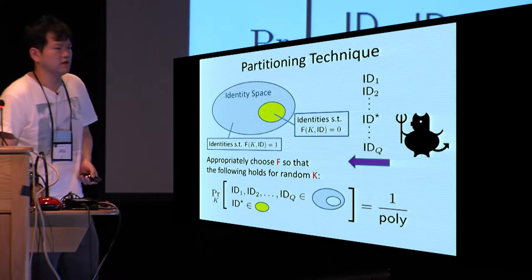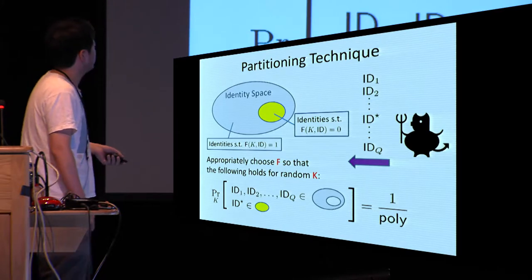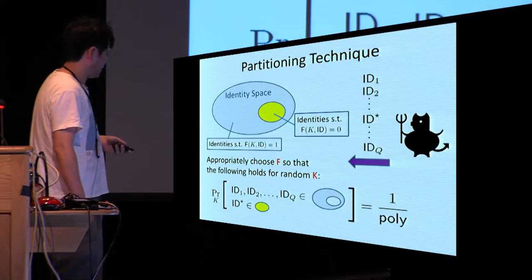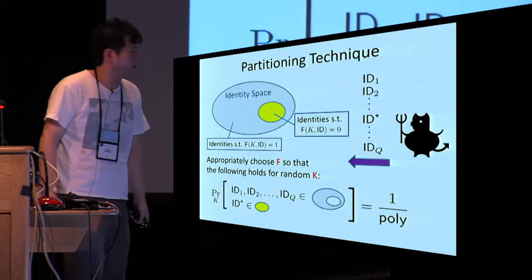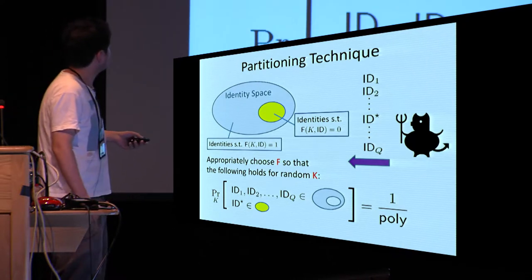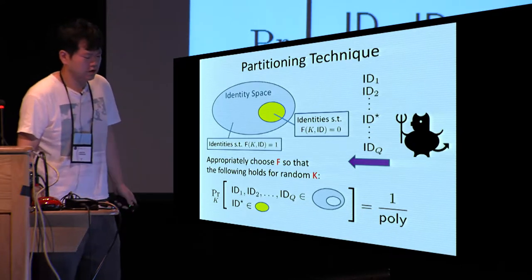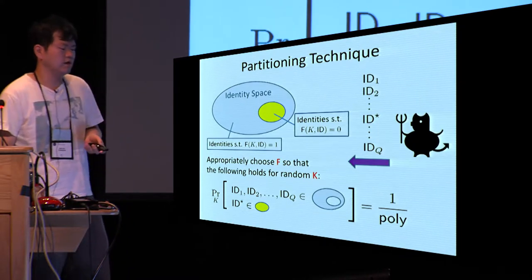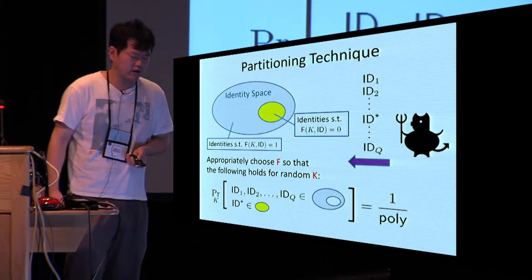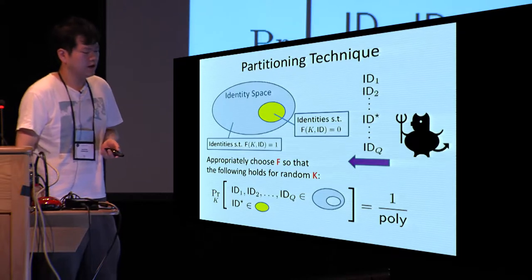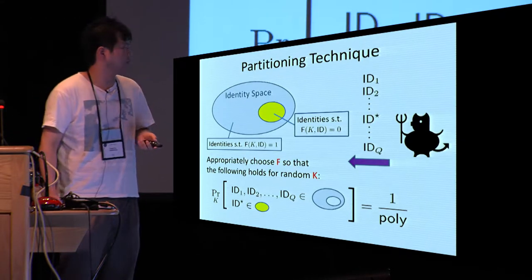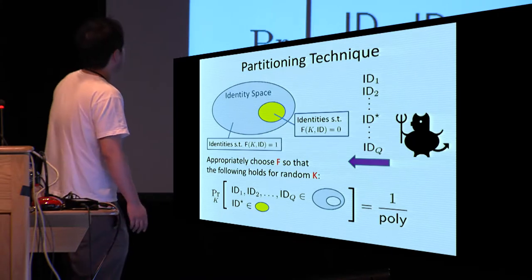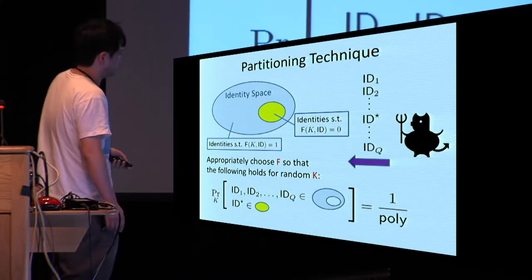Let me explain the partitioning technique more abstractly. In the security proof, we partition the identity space into two parts: the challenge identity space, represented by the yellow area, and other identities. For identities in the challenge identity space, we require F(K, ID) = 0, and for identities outside it, we require F(K, ID) = 1. We need to choose the function F appropriately so that this probability is noticeable for randomly chosen K.